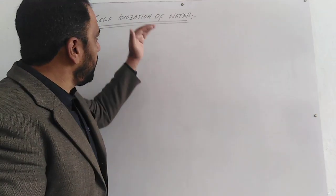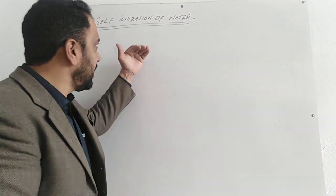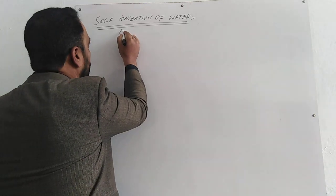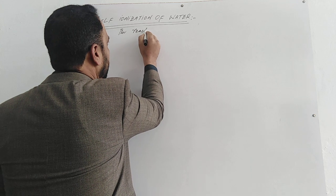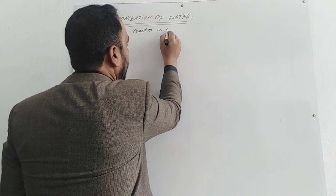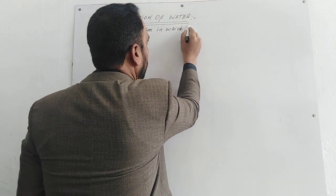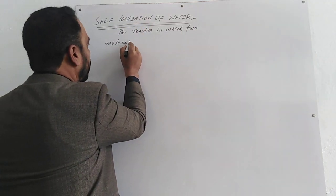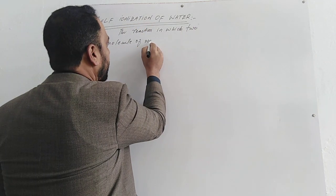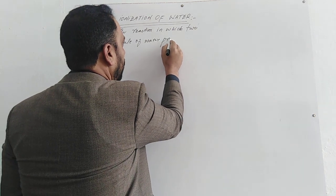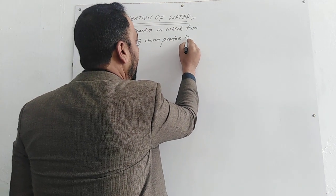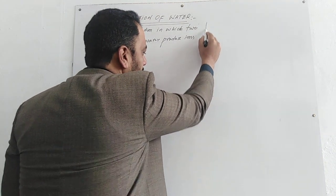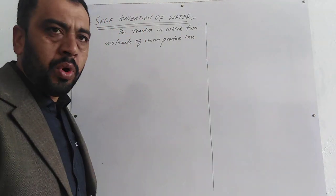Today we are going to discuss self-ionization of water. Self-ionization or auto-ionization of water — the reaction in which two molecules of water produce ions is called self-ionization or auto-ionization of water.